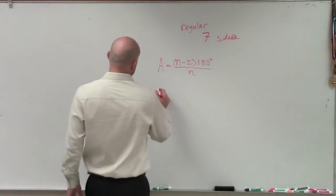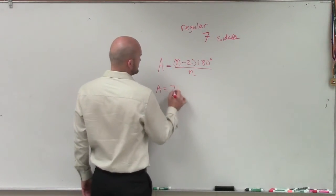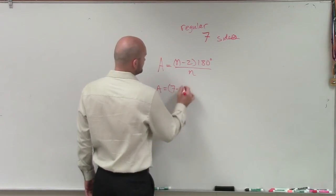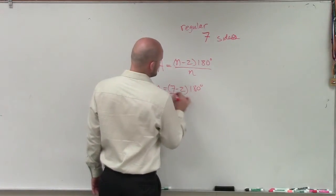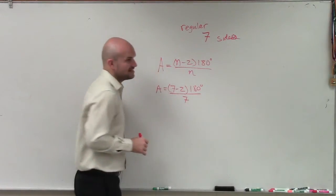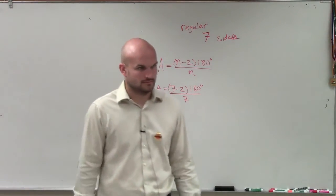So to do that, I have A equals (7 minus 2) times 180 degrees divided by 7.